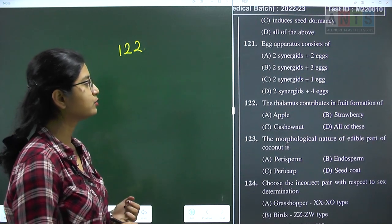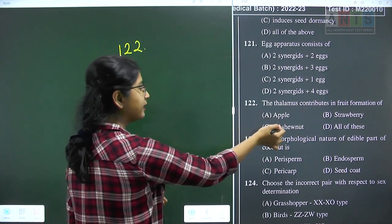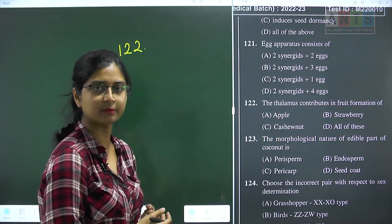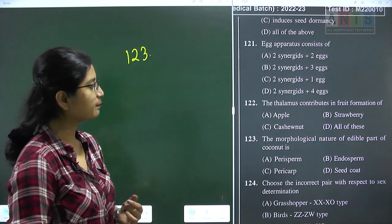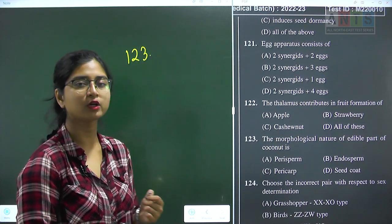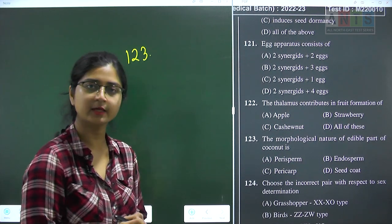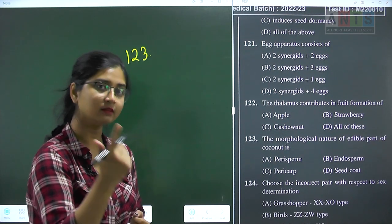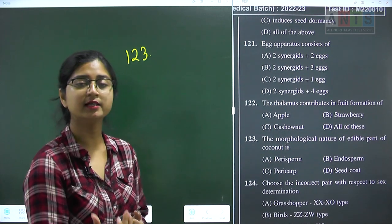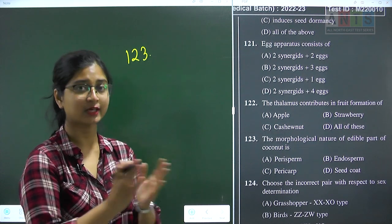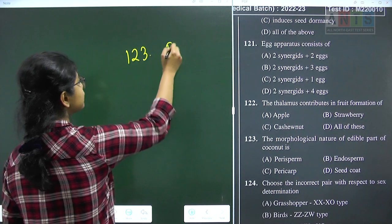Question 122: thalamus contributes in fruit formation of pseudocarpic fruits. For apple, strawberry, and cashew nut, the thalamus contributes in fruit development. Hence all three are pseudocarpic fruits. Question 122 answer is option D. Question 123: the morphological nature of the edible part of coconut. Coconut water represents free nuclear endosperm and the white kernel represents cellular endosperm. Both edible portions of the coconut are represented by endosperm. Question 123 answer is option B.